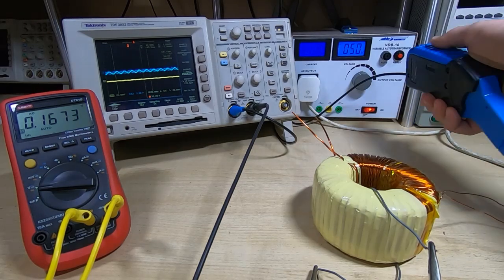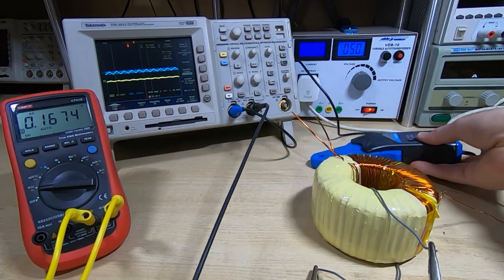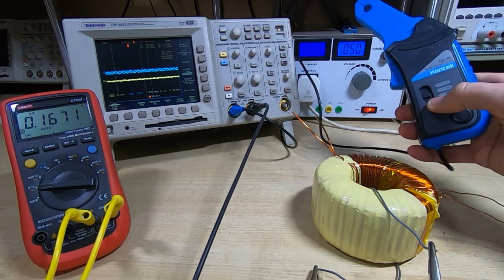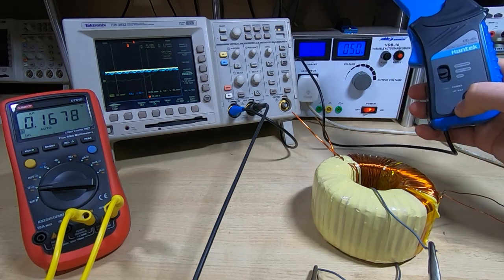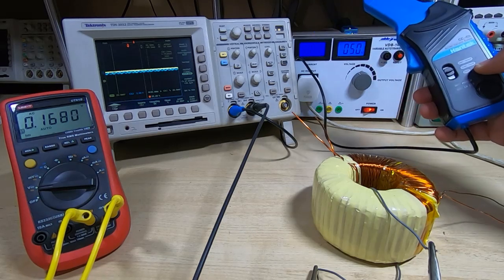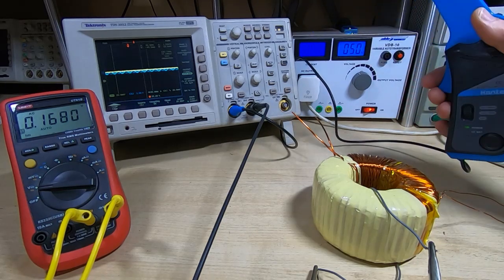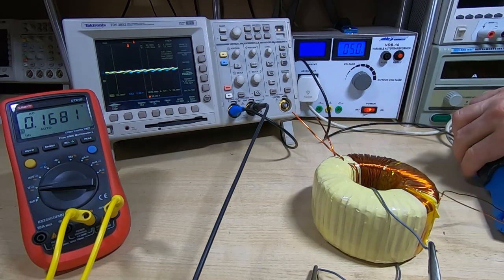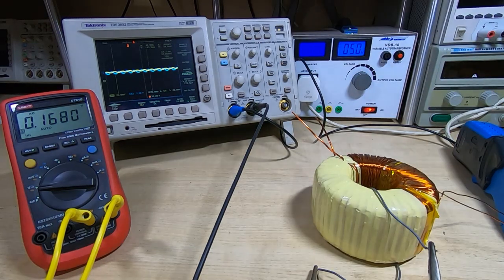To demonstrate that, I've got a current clamp attached to the scope, this is channel one. This is a CC65 and I've got it set to give one millivolt on the scope for every 10 milliamps of current. It translates current going through the wire that you clamped across into a voltage that can be displayed on the scope.